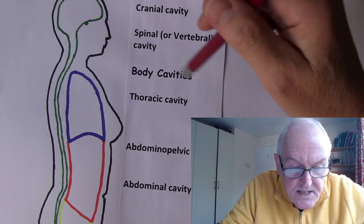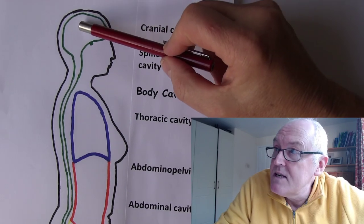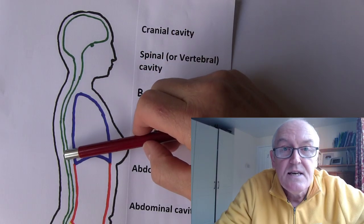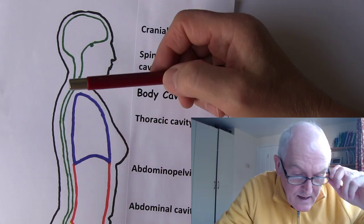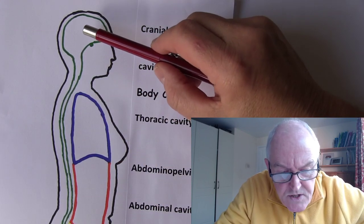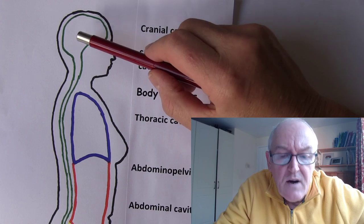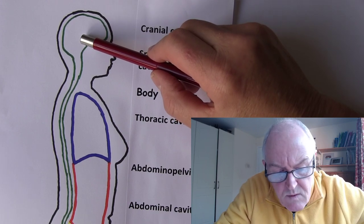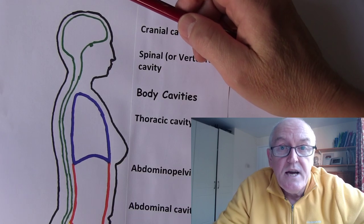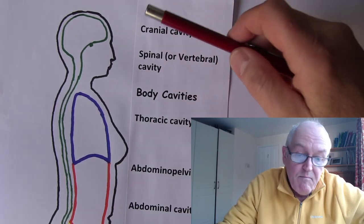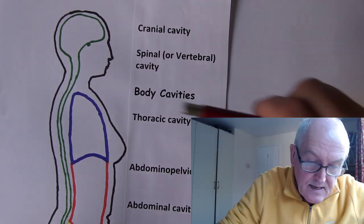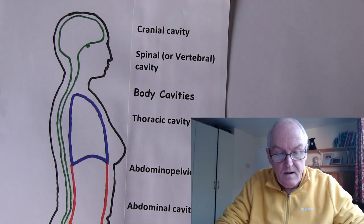The cranial cavity, surrounded by the cranial bones, is continuous with the vertebral cavity, surrounded by the bony vertebrae, forming one continuous cavity. Now we want to look at how this cavity is subdivided, but first — for all of these cavities — we want to look at the membranes associated with the particular body cavity.